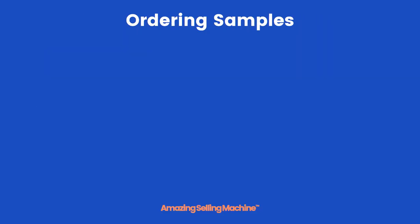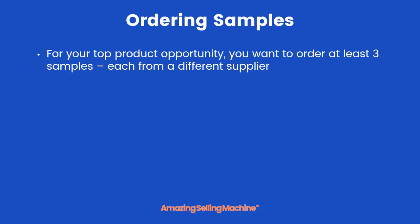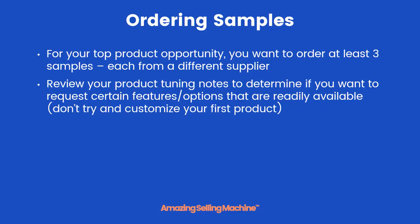By now you should be down to your one single product opportunity, and for that one product we'll want to order at least three samples, with each sample from a different supplier. Now would be a good time to review your product tuning notes to see if there might be any features or options that are readily available from the supplier that you'd want included with the sample.